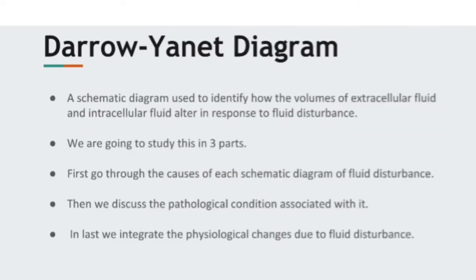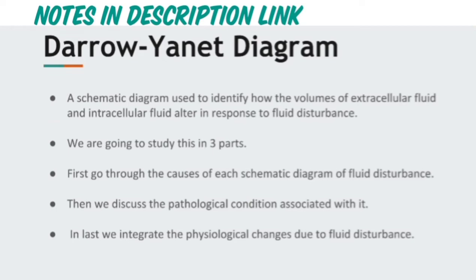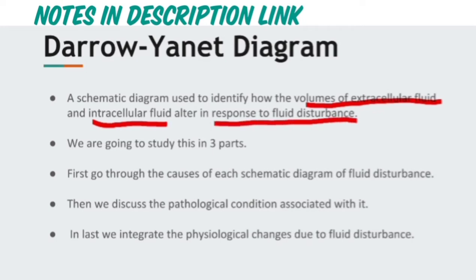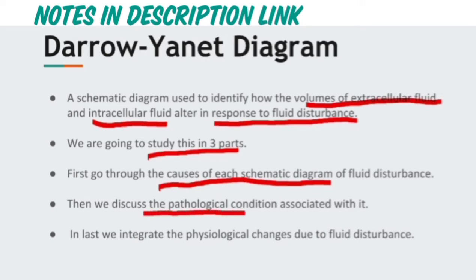The Darrow-Yannet diagram is a two-compartment model used to identify how the volumes of the extracellular fluid and the intracellular fluid change in response to different fluid disturbances. We will study this in three parts: first, the causes of each schematic diagram and how to interpret it; second, the pathological conditions associated with each diagram; and third, the physiological changes that occur due to different fluid disturbances.